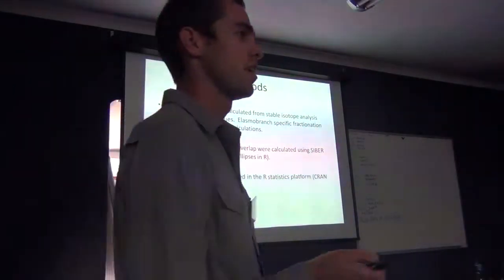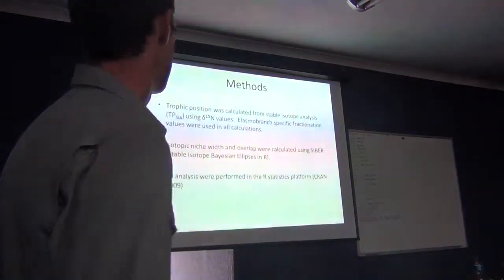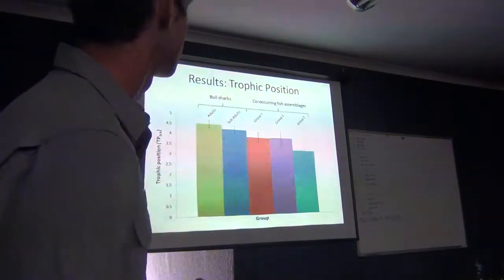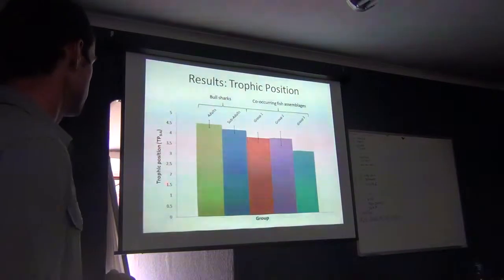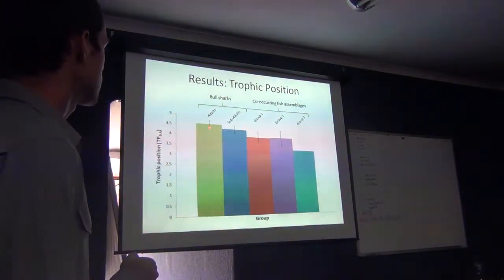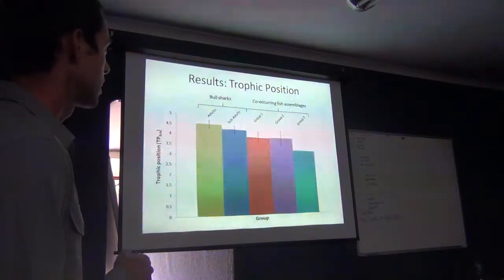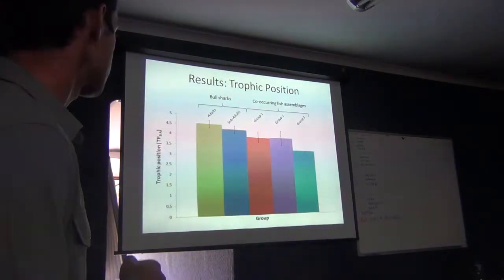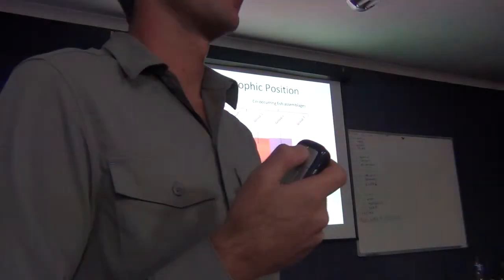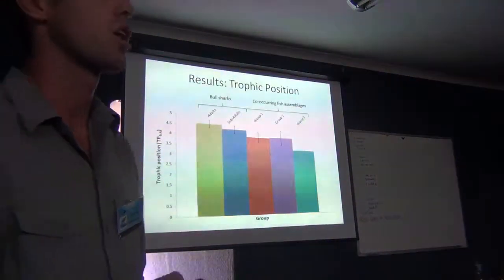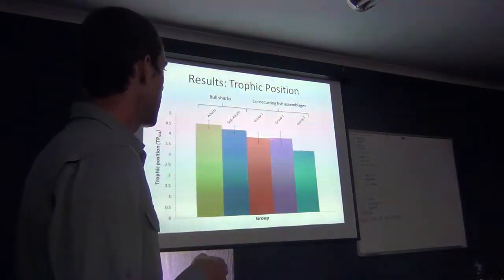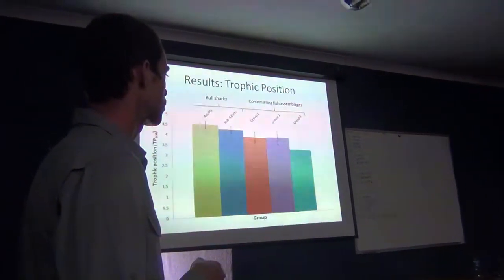The main analytical program was SIBER in R. A brief summary of trophic position results: as expected, the adult sharks had a slightly higher trophic position than the sub-adult sharks. These trophic position results were slightly higher by 0.2 than other studies using stomach content analysis to calculate trophic position, but are a fair representation of their trophic position. This is the offshore predatory teleost component.